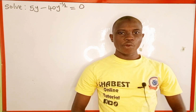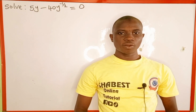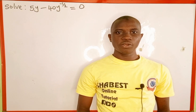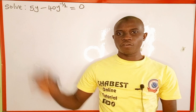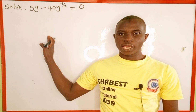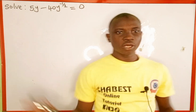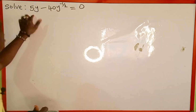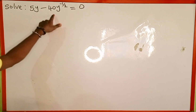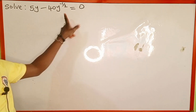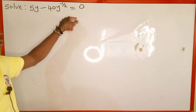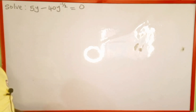Hello everyone, welcome back to Shabez online tutorial. In today's tutorial we're going to learn how to solve for the value of y in this equation. The given equation is 5y minus 40y raised to the power of negative 1 over 2 is equal to 0.